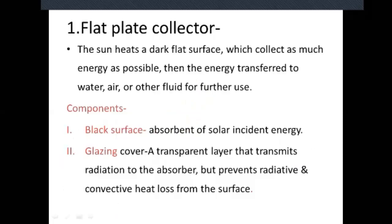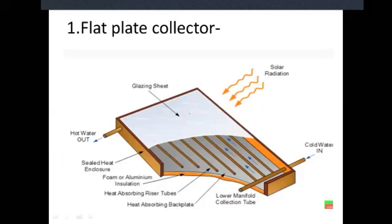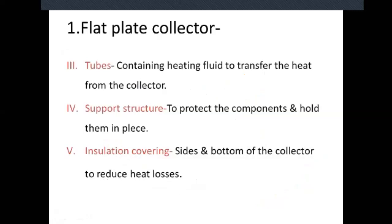After the glazing cover — a transparent layer that transmits radiation to the absorber but prevents radiative and convective losses from the surface — that means the upper glass visible here is the glazing sheet. Its function is that it transmits solar radiation but avoids heat losses, convective losses, and other losses. To prevent those losses, we use the glazing sheet or glazing cover.